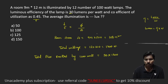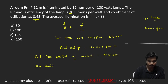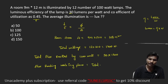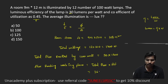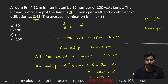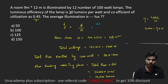We can find out the flux received on the working plane. Flux reaching the working plane = total flux × utilization factor = 30 × 1200 × 0.45 = 36,000 × 0.45 = 16,200 lumens. Now we have total flux reaching the working plane and the area is 108 square meters. So illumination = 16,200 ÷ 108.